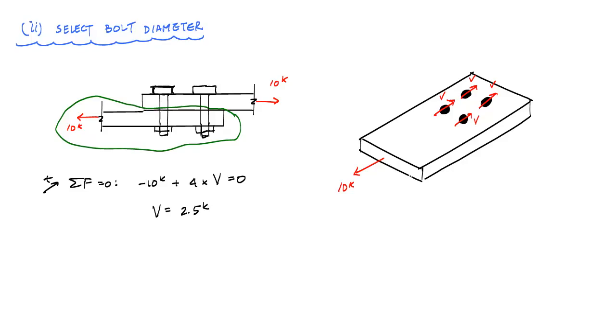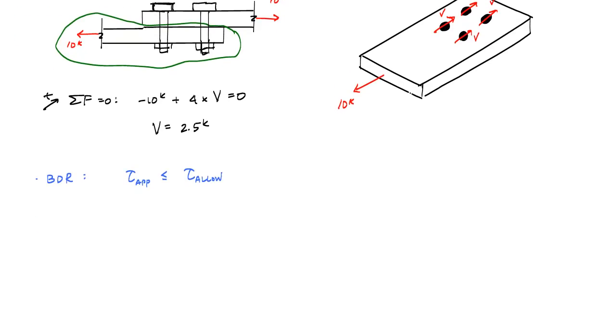Now, in order to select the bolt diameter, I have to start at the basic design relationship, BDR, for shear inside the bolt. And that would mean that I want tau applied inside the bolt to be less than or equal to whatever shear I allow inside the bolt. And for here, the limit state is shear fracture of the bolt. And this tau allow is going to be tau ultimate or tau fracture, tau ultimate, divided by the factor of safety. And so what I'm going to be allowing is 54 ksi divided by 3, which is 18 ksi in each bolt.